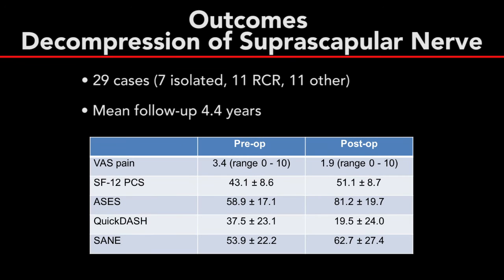The following outcome scores for suprascapular, axillary, and brachial plexus nerve decompression all represent the unpublished personal results of the senior author. After suprascapular nerve decompression, there was an overall improvement for all patient-reported outcome scores. The population consisted of seven patients with isolated nerve compression and 11 with associated rotator cuff tear, with an average follow-up of 4.4 years.